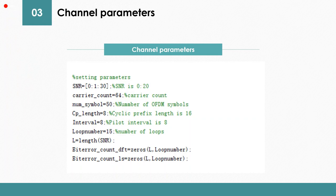One is LS, one is DFT. I set the carrier count to be 64, the number of symbols to be 50, the cyclic prefix length is 8, the pilot interval is 8, and the loop number is 15. These two initialized metrics are to count the number of error bits.